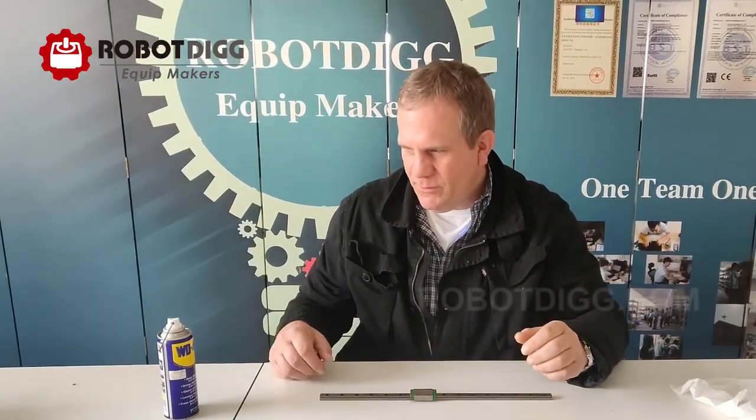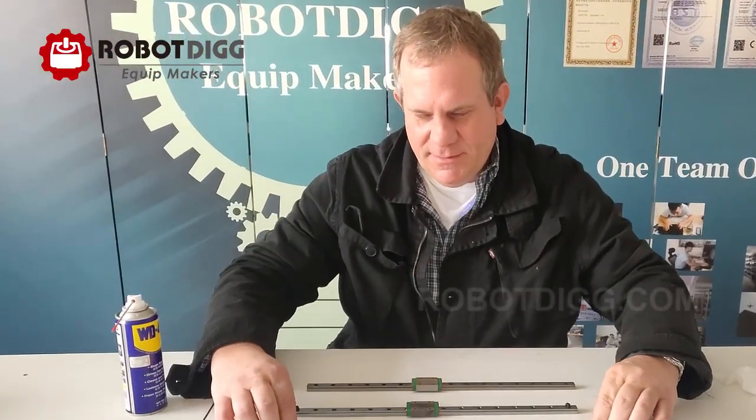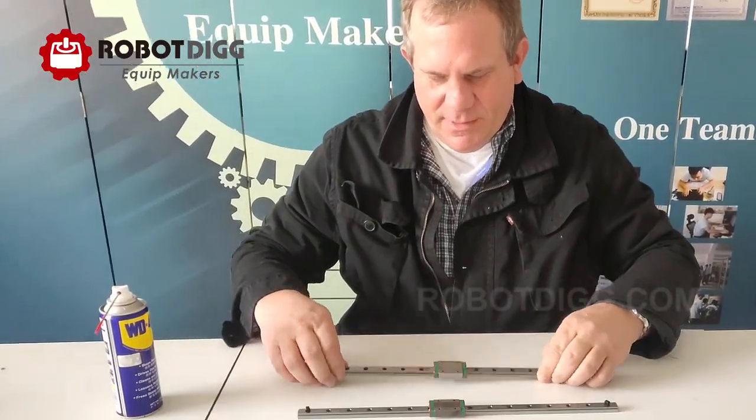Okay, so we will add some lubricant to the three rails and the bearing boxes. See what we have.